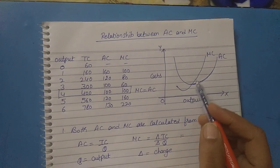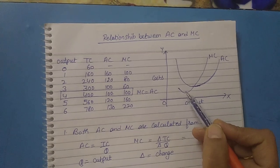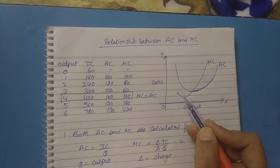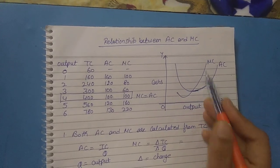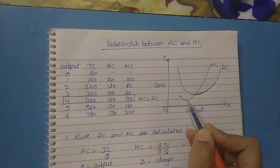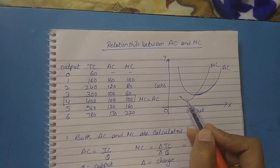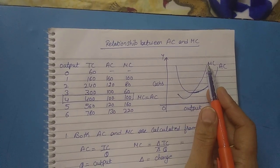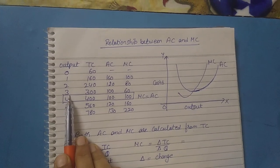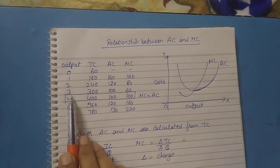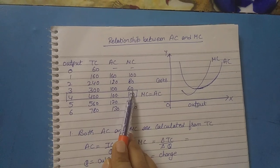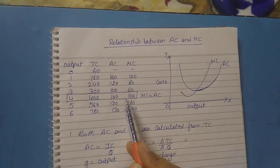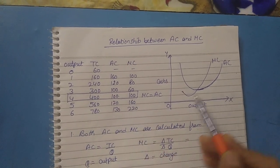Next is the MC curve. Marginal cost first diminishes, and it diminishes faster. It reaches its minimum point, then it begins to rise. You can see it falls, and this is the minimum point of the marginal cost. After this point, it starts rising. As you can see in the schedule, when the producer is producing the third unit, marginal cost was 60 — this is the minimum point of the marginal cost. After the third unit, from the fourth unit onwards, the marginal cost starts increasing.